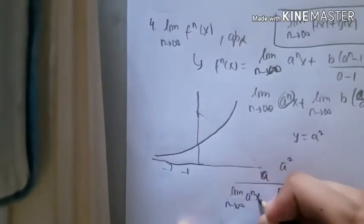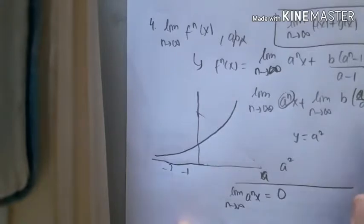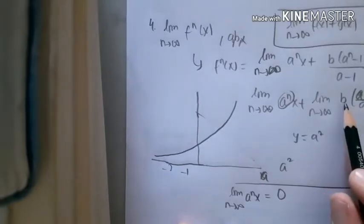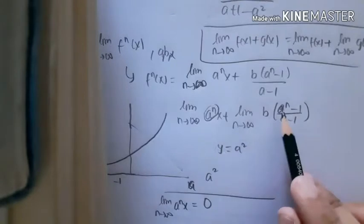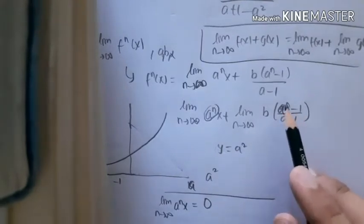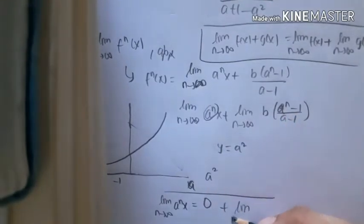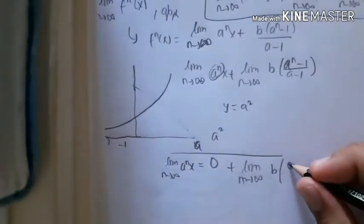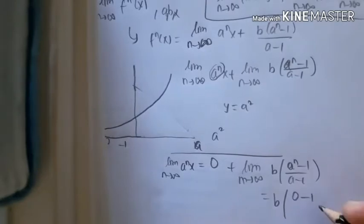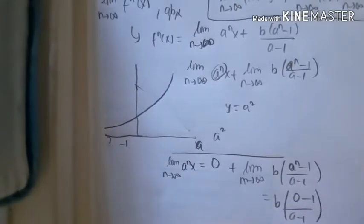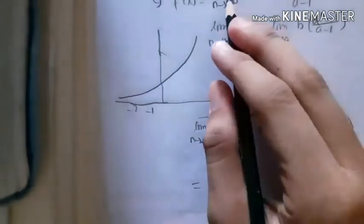What about this? We can say that b(a^n - 1)/(a - 1). Remember the n is used as the limit, and we know that the limit of a^n is zero. So we can say the limit as n→∞ of this is b(0 - 1)/(a - 1). We should do it like this: b(0 - 1)/(a - 1).